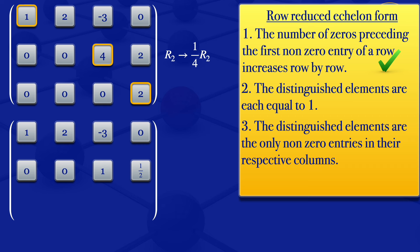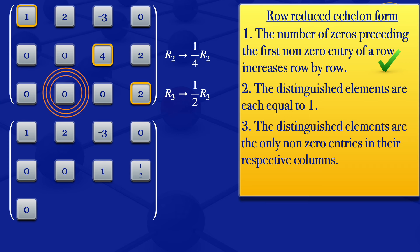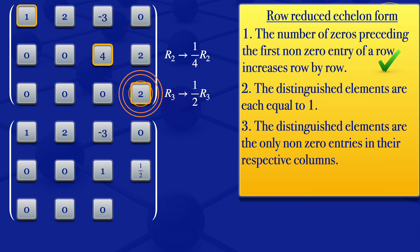So we are now done for row two. We go on to row number three — we are having a two here, and what we need is a one. So when we have a two and we need a one, we just divide by two. Using elementary operations, we have to divide all the elements in that row by two. So we transform row three to one over two times row three, dividing each element of row three by two: zero, zero, zero, two divided by two gives one.